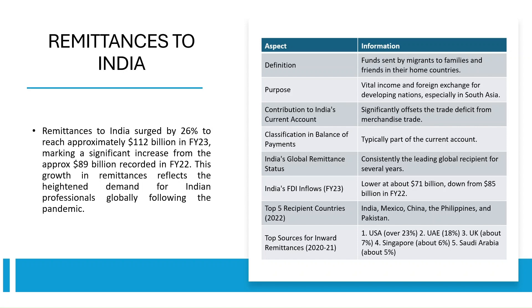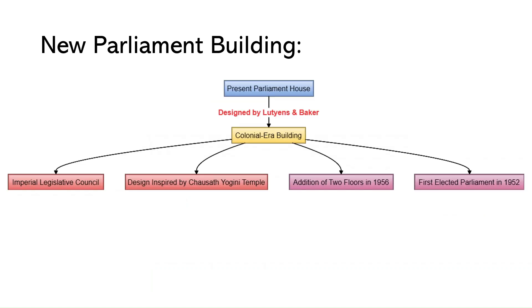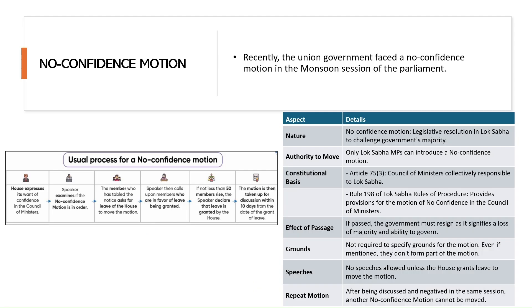Next is the iconic new Parliament building. The old building was made during the colonial era by Lutyens and Baker, whose design was inspired by the Chausath Yogini temple. One of the most important features installed in the new Parliament building was the Sengol, which represented the transfer of power during the Chola dynasty period.